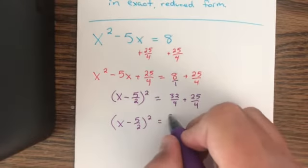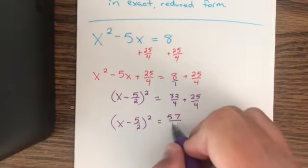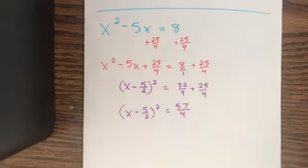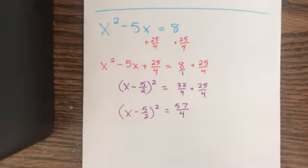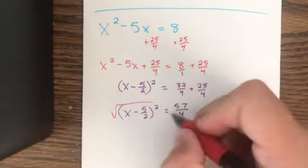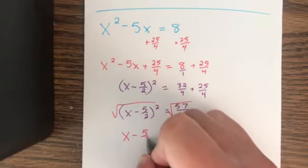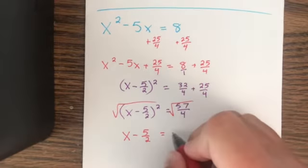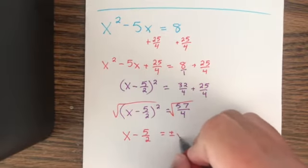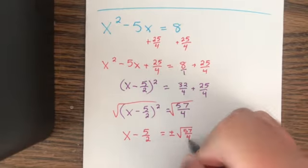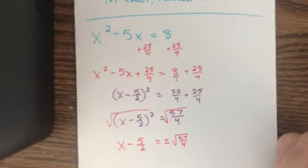We completed the square, we simplified. Now we'll take the square root of both sides. We get x - 5/2 equals plus or minus the square root of 57/4. All we have to do is get x by itself and simplify this radical.